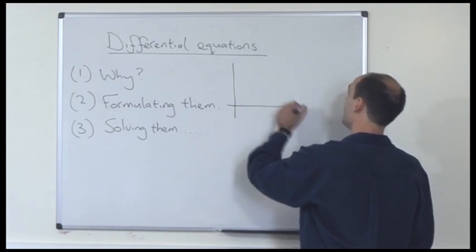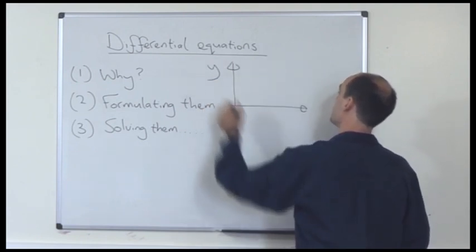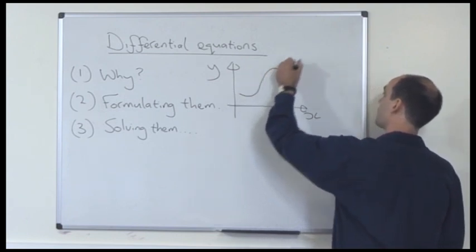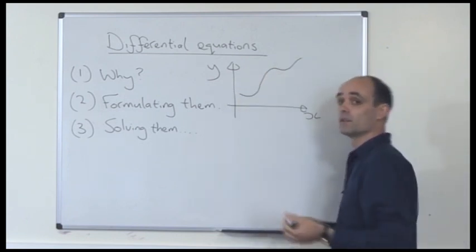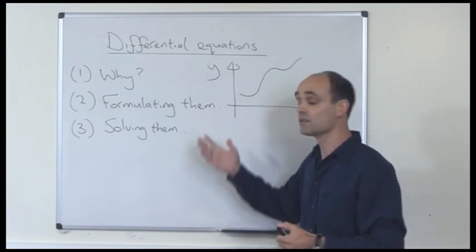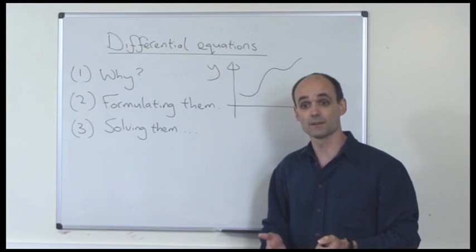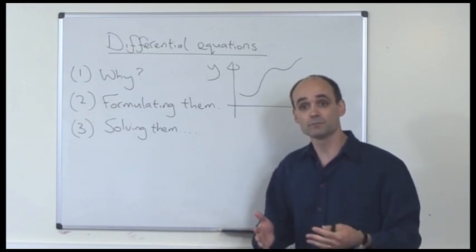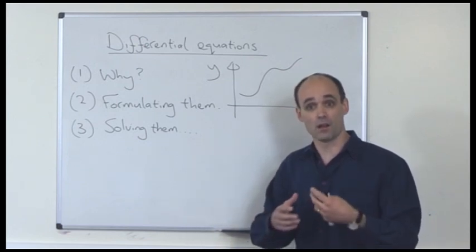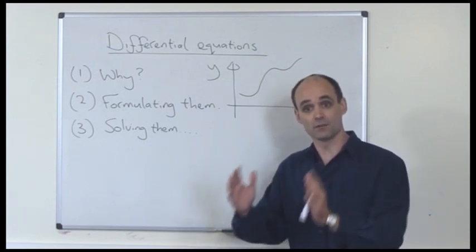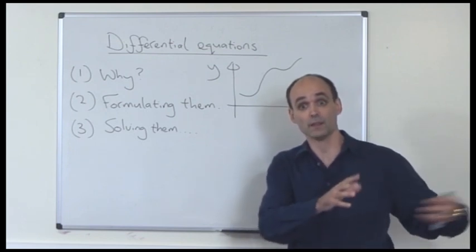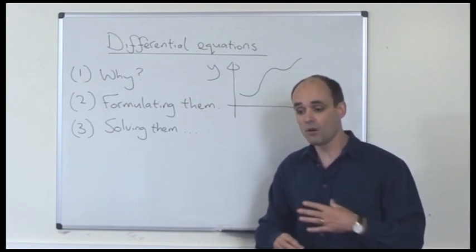So if you have one quantity, let's call it y, which is changing with respect to another quantity, let's call it x, then the graph will look like that. Differentiating y with respect to x tells you how fast y is changing with respect to x. Now, because many physical laws are formulated in terms of the rate of change of something with respect to something else being equal to something, differential equations get used all over the place.